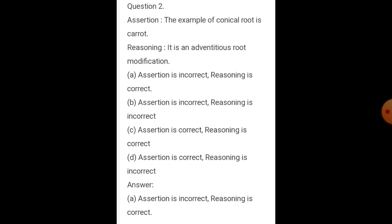Question number two — Assertion: the example of conical root is carrot. That is correct. Reason: it is an adventitious root modification. The root grows from a location other than underground, such as a stem or leaf — that is called adventitious root. The assertion is correct but the reason is incorrect, so the answer is A or D.